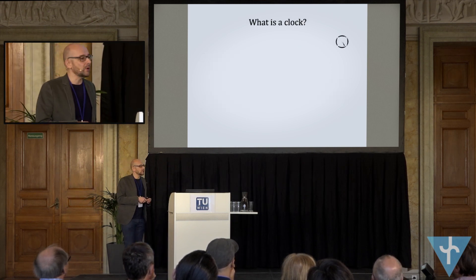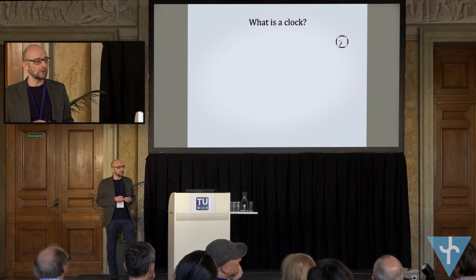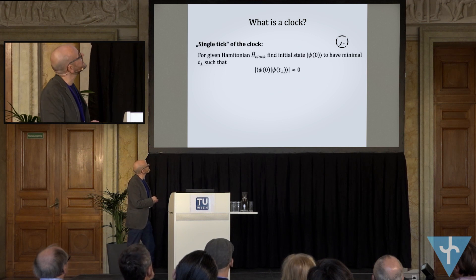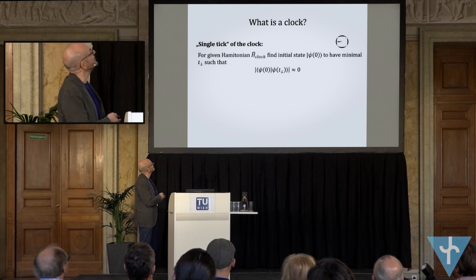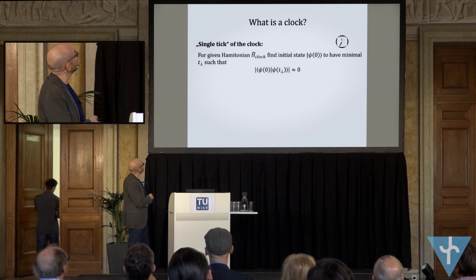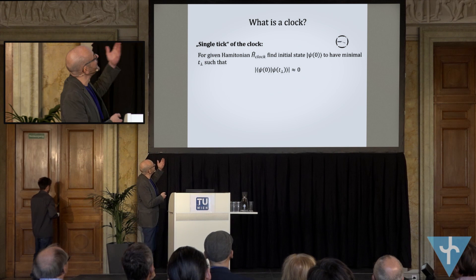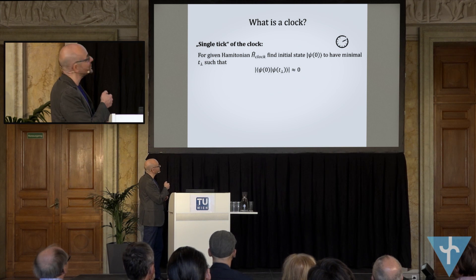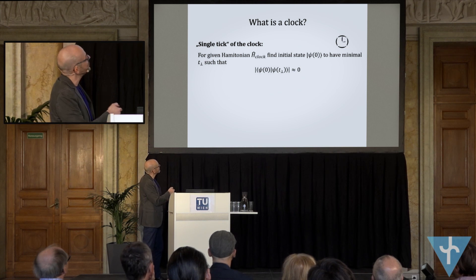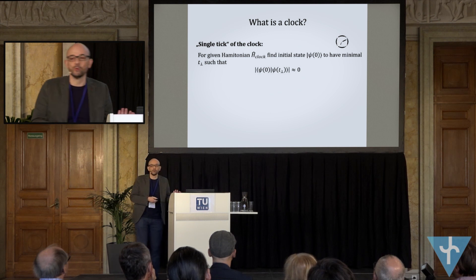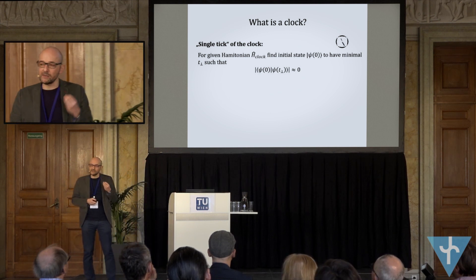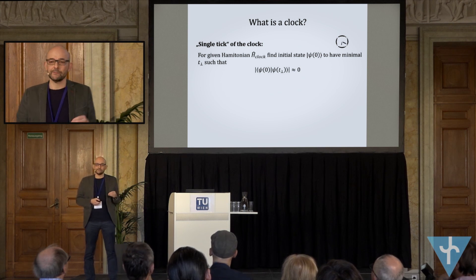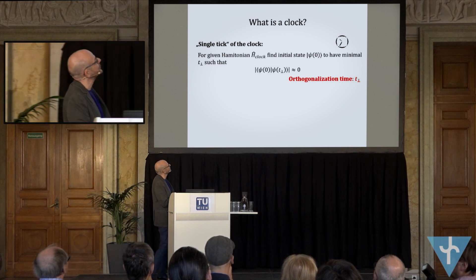What is time? I take an operational approach: time is what the clock shows. The clock is a system with an internal Hamiltonian. For every given Hamiltonian, in order to define a single tick of the clock, I find such an initial state that has the minimal orthogonalization time T_orthogonal — the time at which the overlap between the initial state and the final state is almost zero. This orthogonalization time defines a single tick.